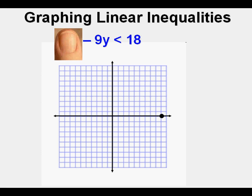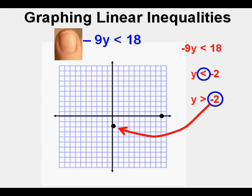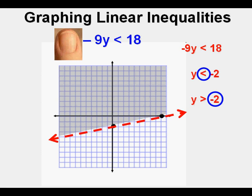Now find the y-intercept by hiding the x term, giving negative 9y is less than 18. Dividing by negative 9 gives negative 2, and since we divided by a negative number, we switch the direction of the sign. Mark the y-intercept at negative 2. Now draw the boundary line — it's a dashed line since it's greater than. We shade above the boundary line since greater than means up.